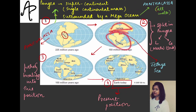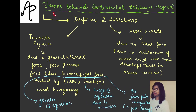Laurasia and Gondwana land were separated by a water body known as the Tethys Sea. We have also seen what were the forces behind the continental drift. According to Wegener, the drift took place in two different directions: one towards the equator because of forces of gravity, pole-fleeing forces, and buoyant forces; and another movement towards the west because of tidal force.